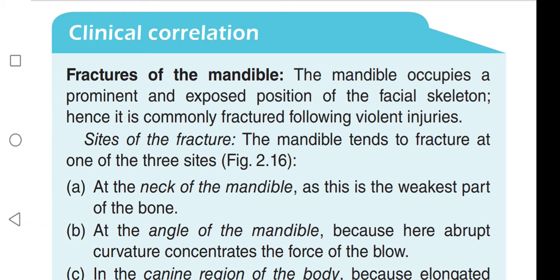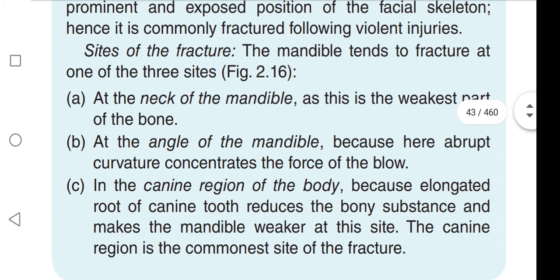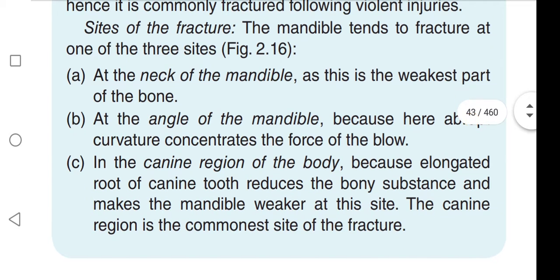The mandible tends to fracture at one of three sites. First, at the neck of the mandible, as this is the weakest part. Second, at the angle of the mandible, because the abrupt curvature concentrates the force of the blow. Third, in the canine region of the body, because the elongated root of the canine tooth reduces the bony substance and makes the mandible weaker at this site.